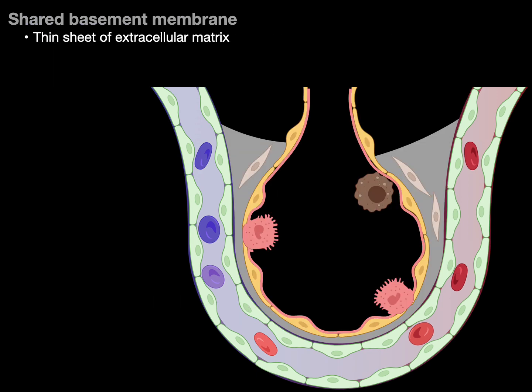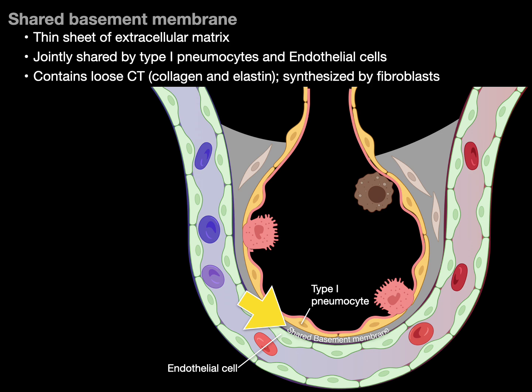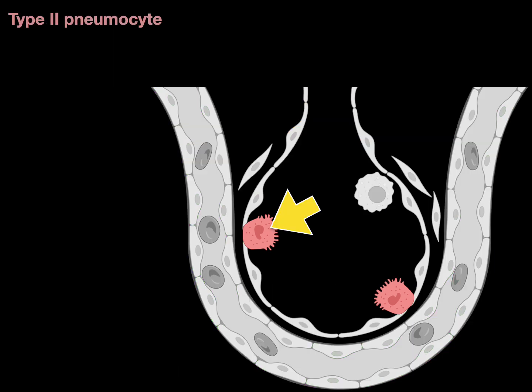The shared basement membrane is a thin sheet of extracellular matrix jointly shared by type 1 pneumocytes and endothelial cells. It contains loose connective tissue — wisps of collagen and elastin that are synthesized by fibroblast cells.